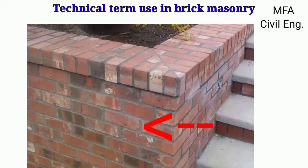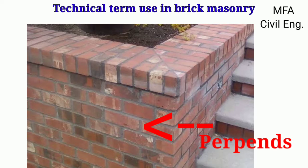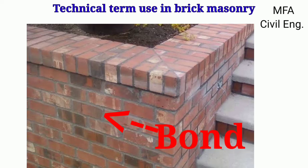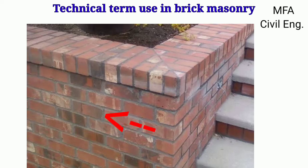The vertical joint in each course of brick masonry work is called the perpend. For a good bond, the perpend in alternate courses should be vertical one over the other. The method of arranging bricks in a course so that the individual units are tied together is called the bond. Bonding eliminates continuous vertical joints both in the body as well as the face of the masonry wall.